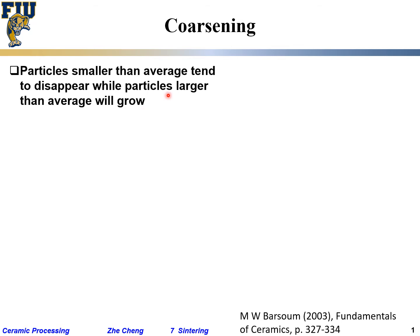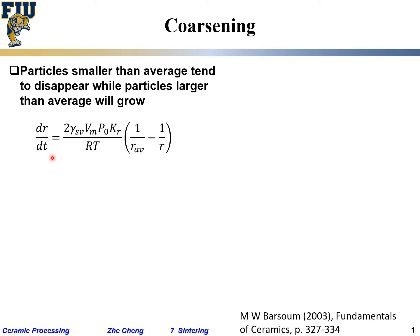Generally what people find is that particles smaller than average tend to disappear, while those larger than average tend to grow. Earlier scientists described this with a model: dr/dt, the rate of particle size growth — r being the radius of your particles — dr/dt is a linear growth rate for the particle radius.